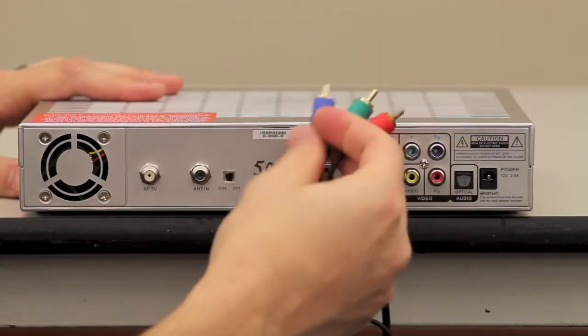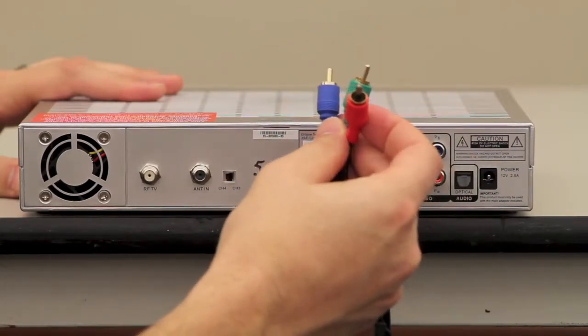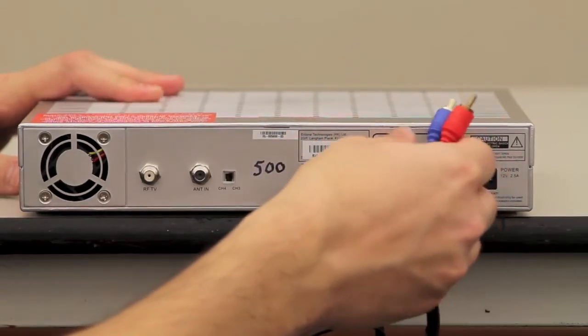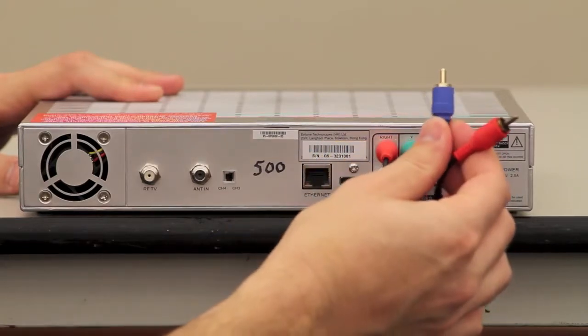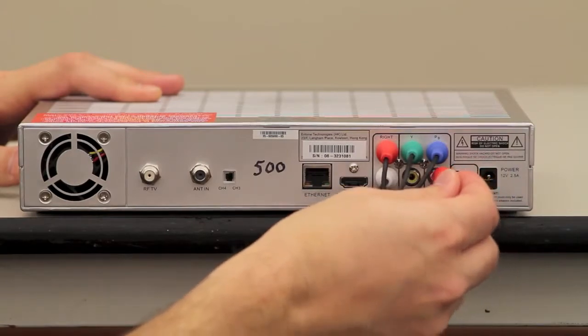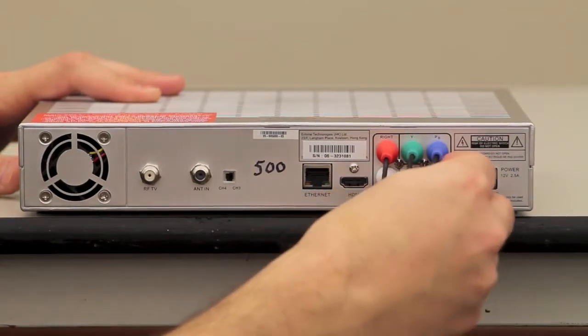You will plug the green component cable into the green video, the blue goes into the blue connection on the set top box, and the red goes directly below the blue.